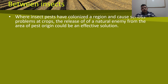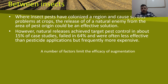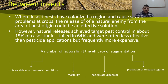In the next part of the presentation, we discuss biotic interactions between insects in agro-ecosystems. Studies have revealed that the release of a natural enemy of an exotic species pest as a repressive agent can be an effective solution, but this tactic has proven in most cases to be expensive and does sometimes control less than pesticide applications. A number of factors limit the efficacy of augmentation of the release agent: unfavorable environmental conditions, mortality, inadequate dispersal of the released agent, and predation of released agents.